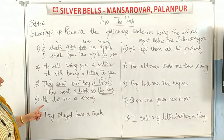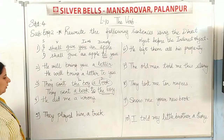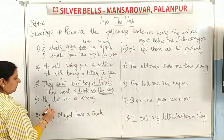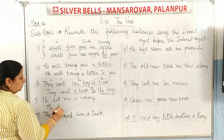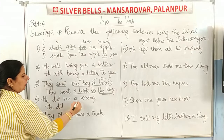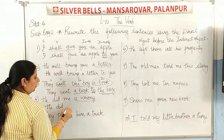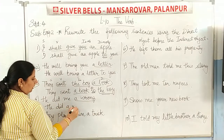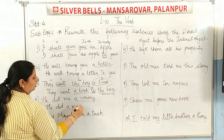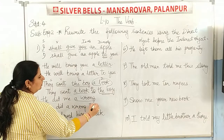'He did me a wrong' — so we rewrite it as: 'He did a wrong to me.' By adding preposition 'to,' 'me' moves to the back.